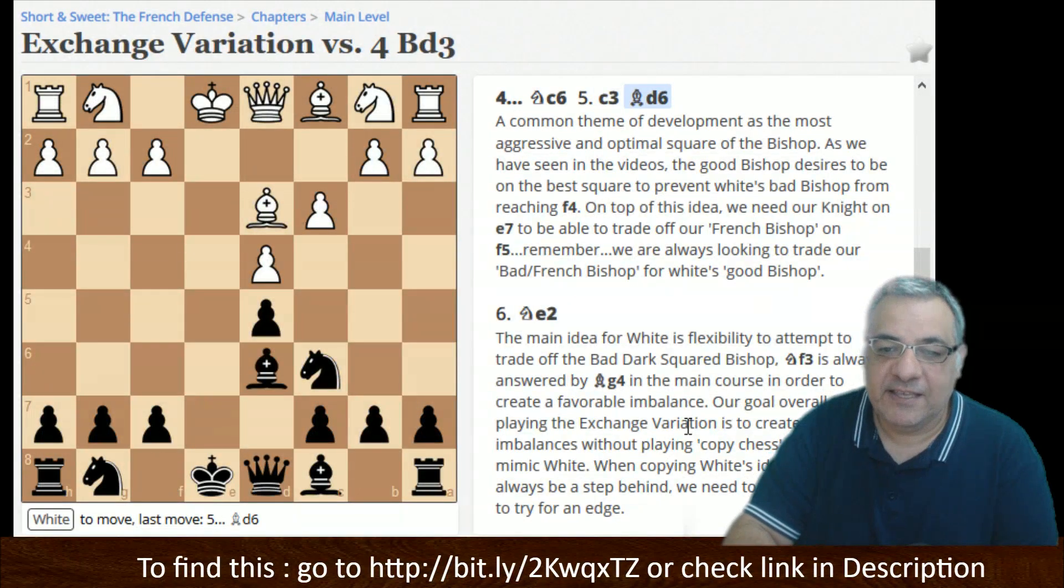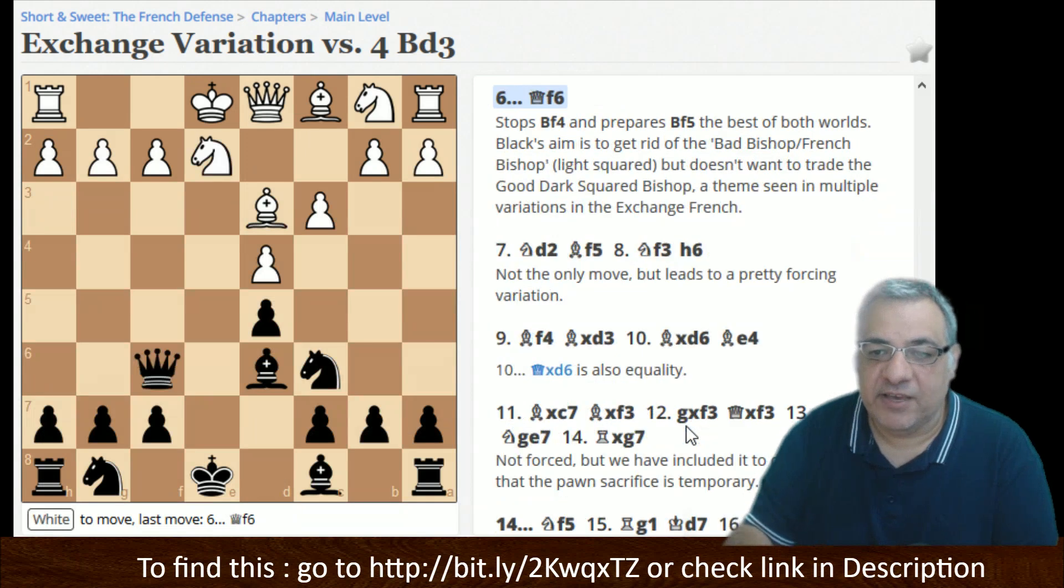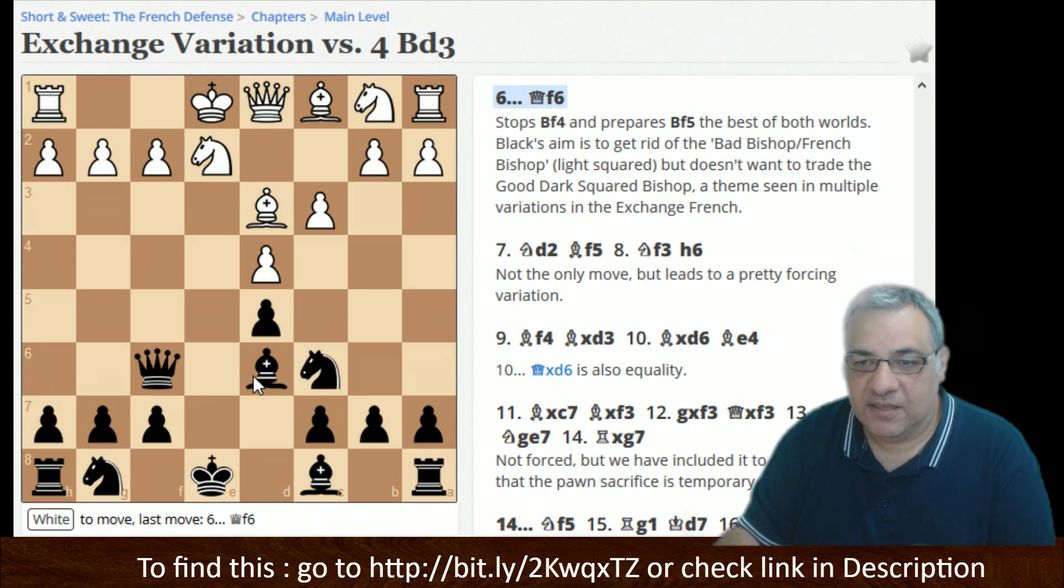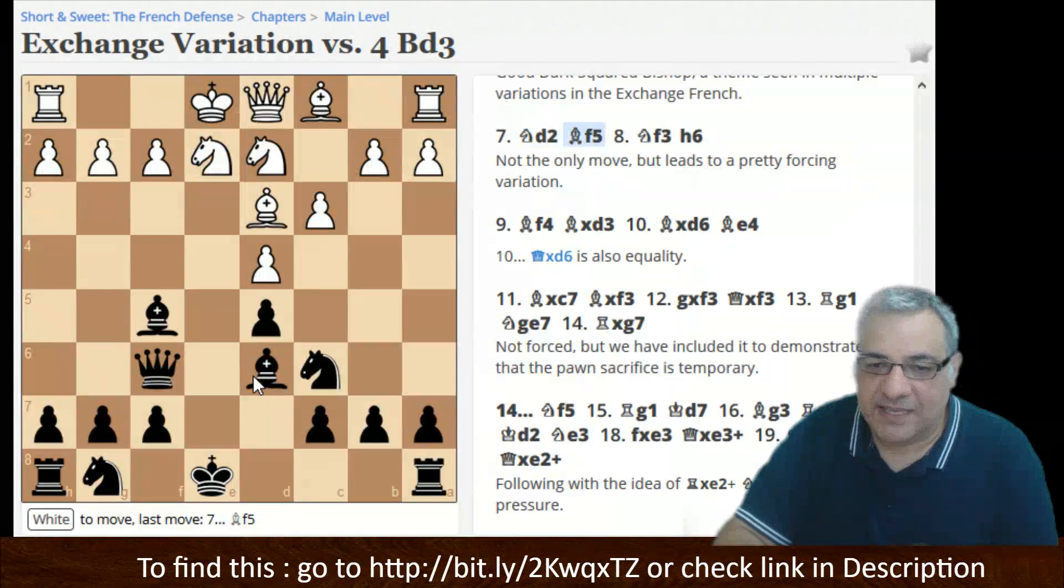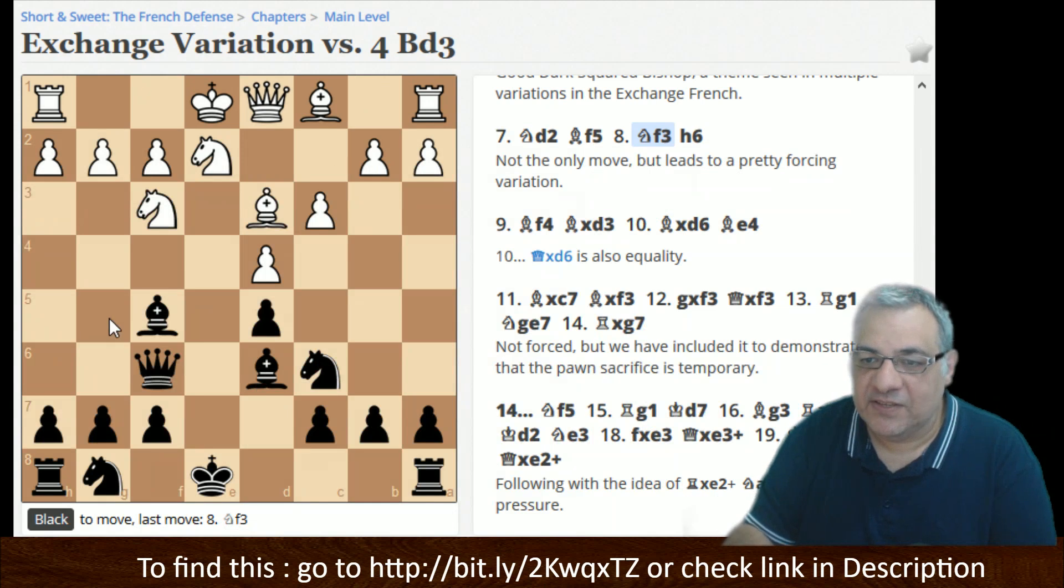And here this early Queen move stops Bishop f4 because white wants to get rid of this bishop for this one, and basically you can have this sharp variation where Bishop g5 is threatened, you can stop that.